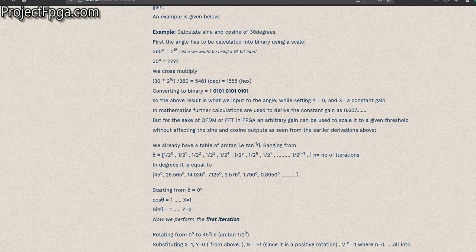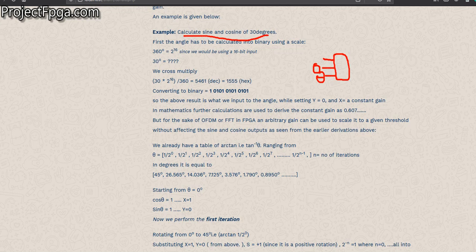Let's go through an example. Assume you want to calculate sine 30. If you are using this block to find the sine of an angle, you have to set your Y to zero, set your theta to the angle you are looking for, and set your X to 0.607. If you put values of X and Y, that means you are looking for a phase shift, but here we're using it to find the sine of an angle.